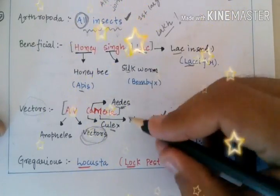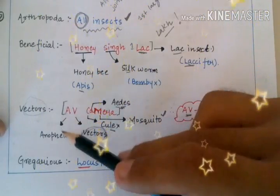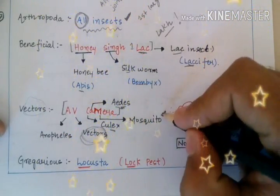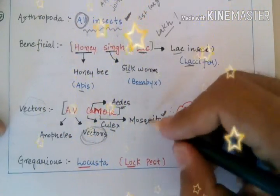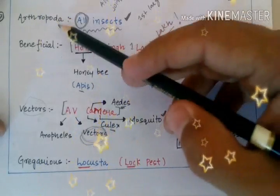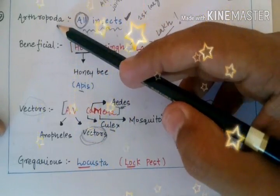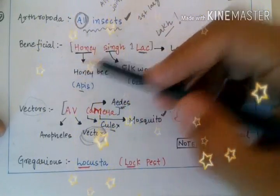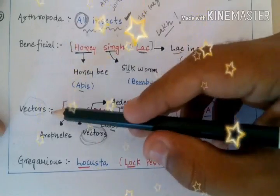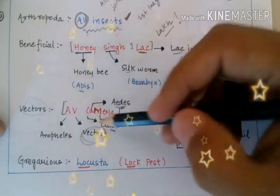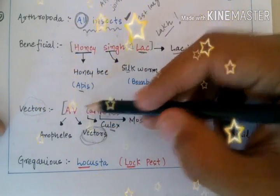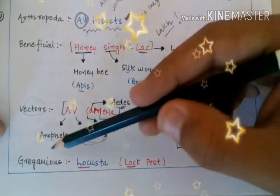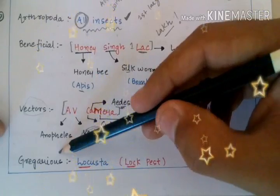In 'AV Cam,' C means Culex, A means Aedes, and M means mosquito, since female Anopheles, Culex, and Aedes are all mosquitoes. So this is a particular trick to memorize that all of these are mosquitoes and mosquitoes are insects, therefore these are Arthropods.